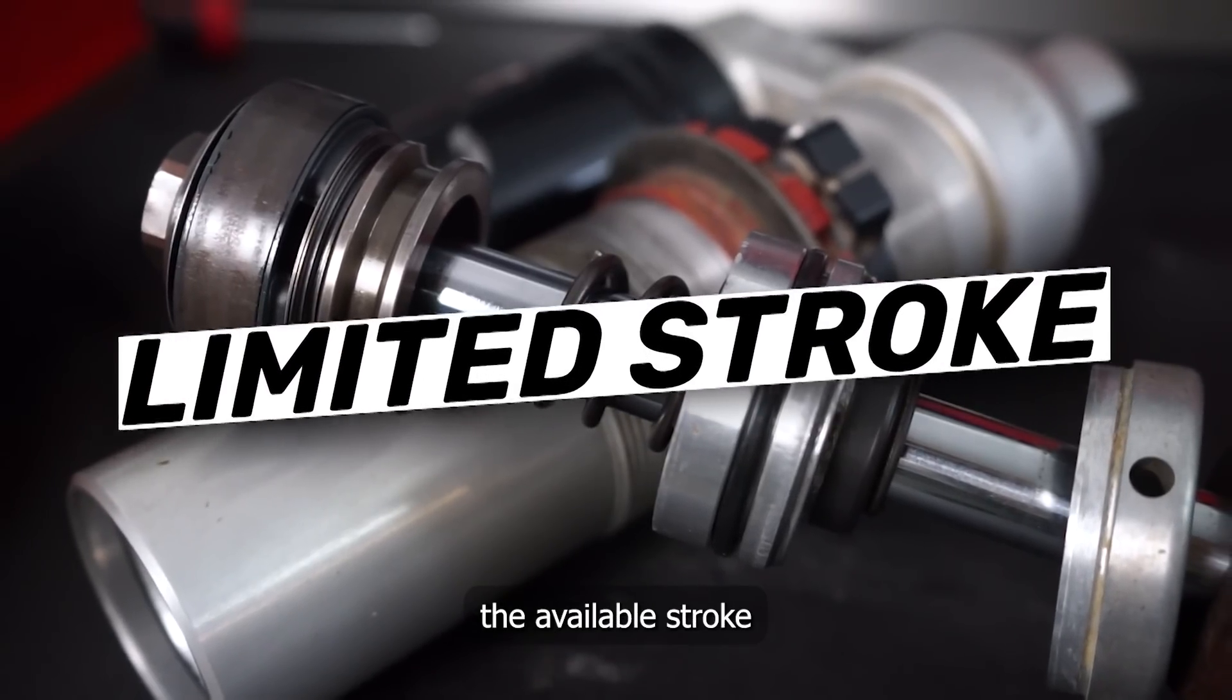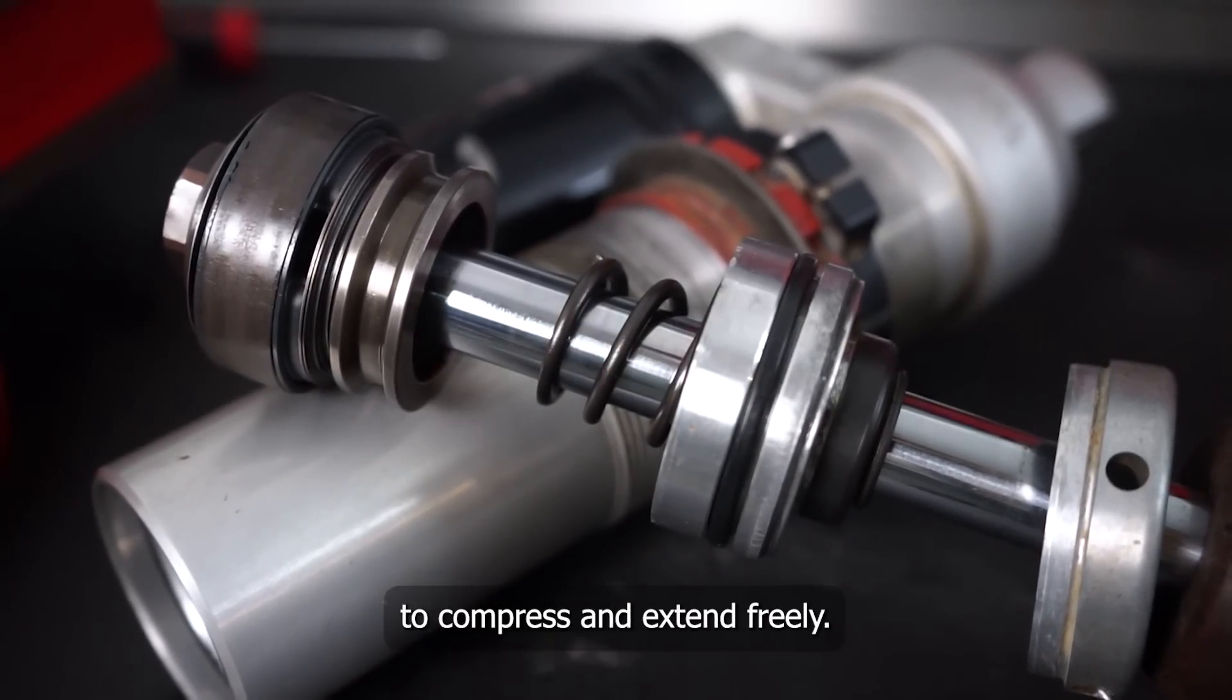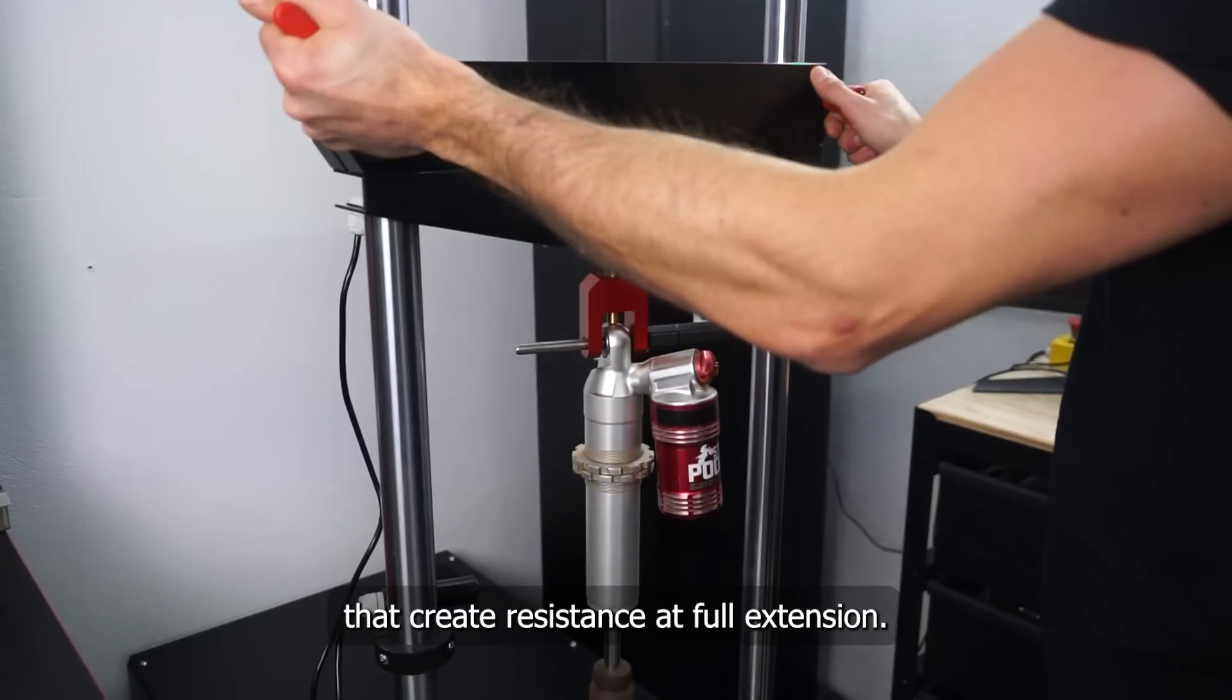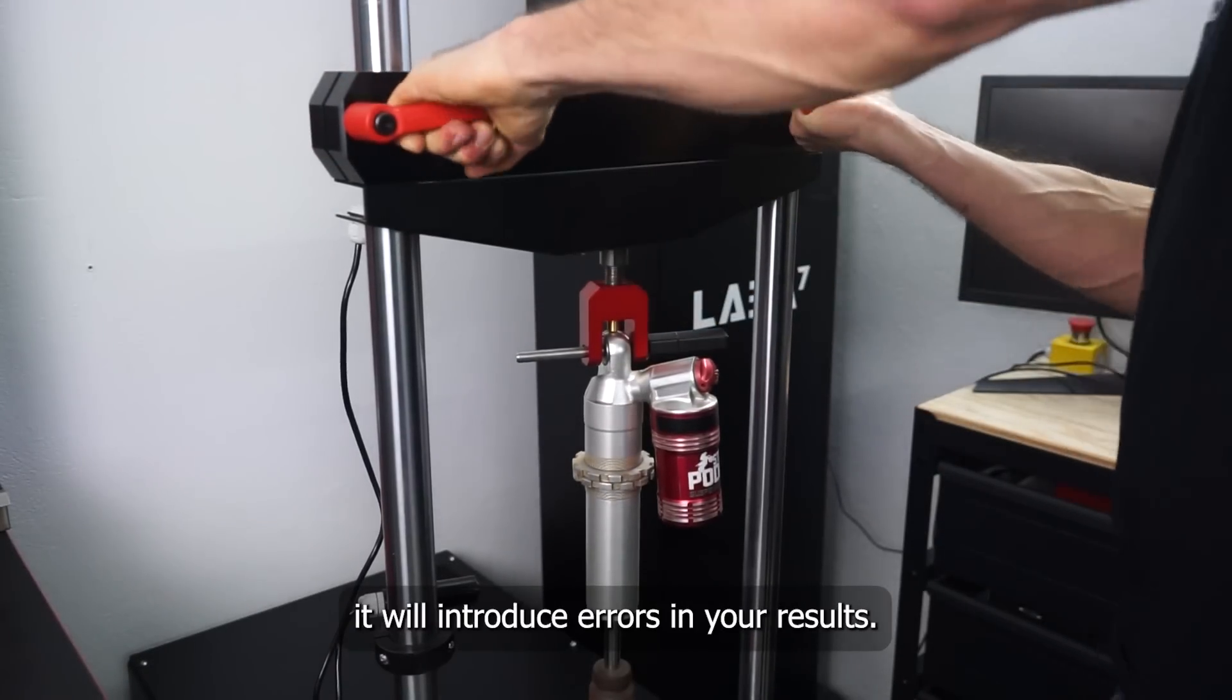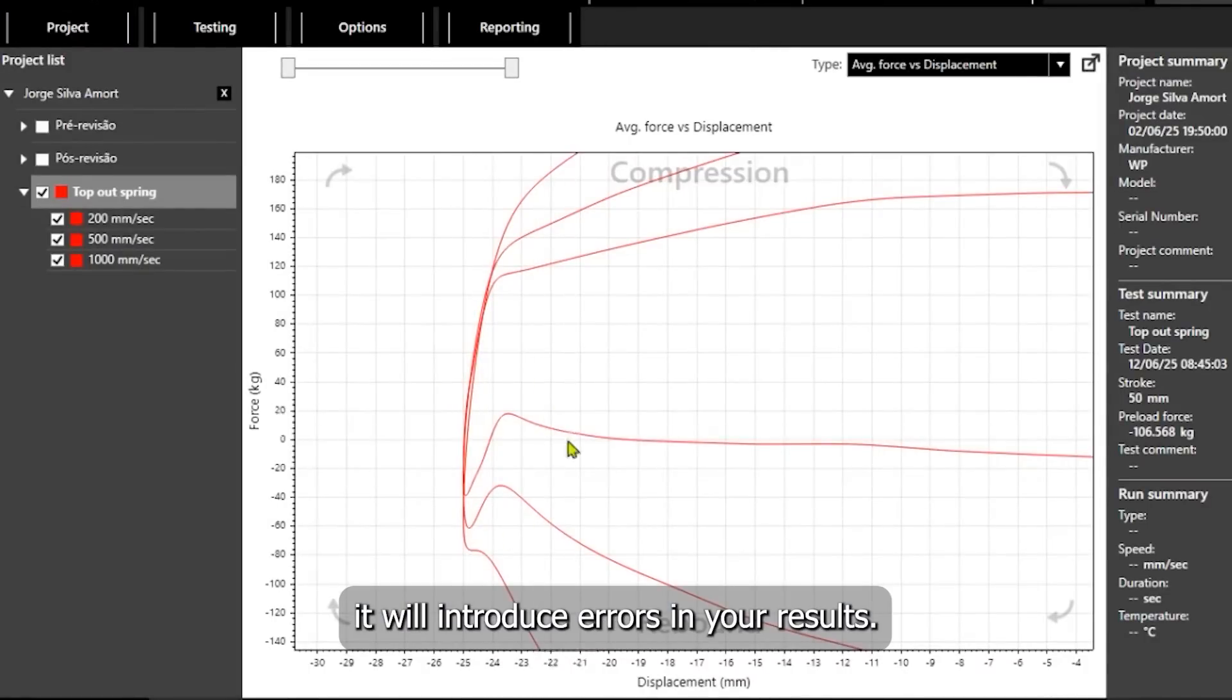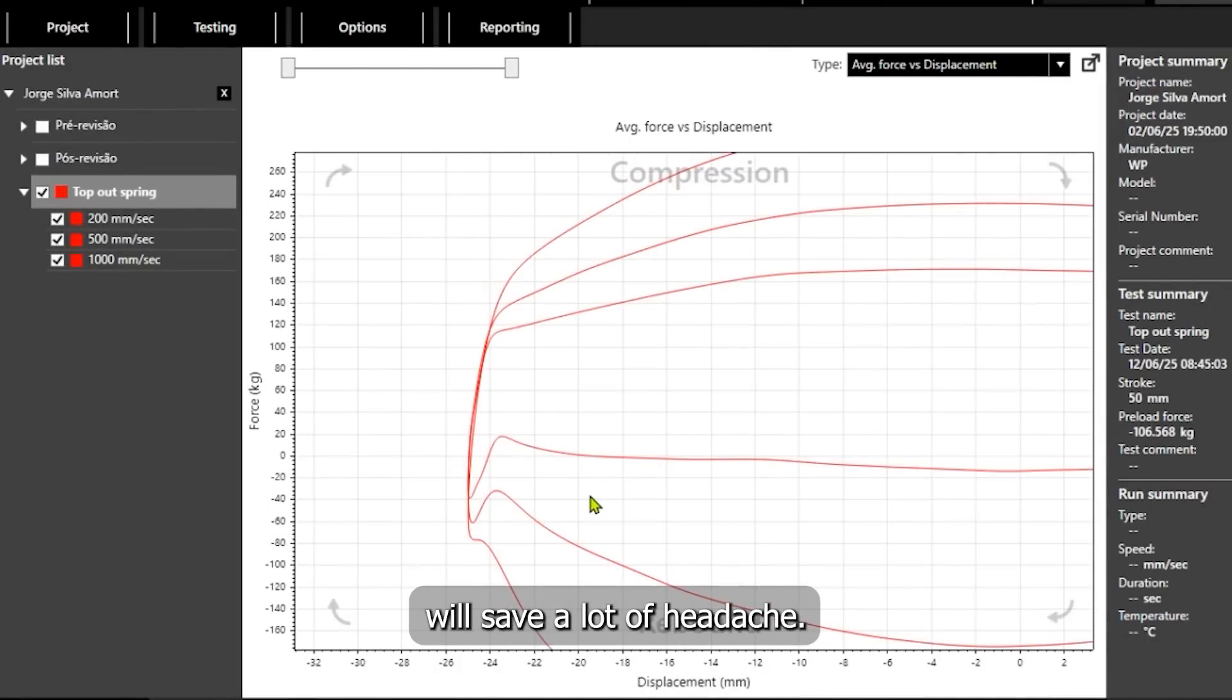Number 3, the shock doesn't have the available stroke to compress and extend freely. Some shocks have top-out springs that create resistance at full extension. If the spring is engaged during the test it will introduce errors in your results. A simple verification will save a lot of headaches.